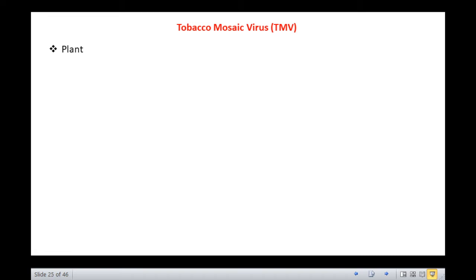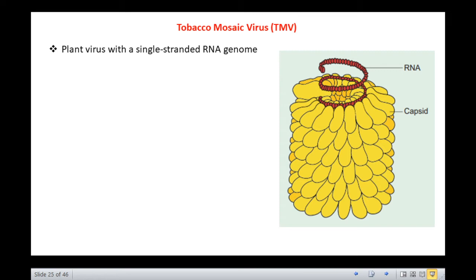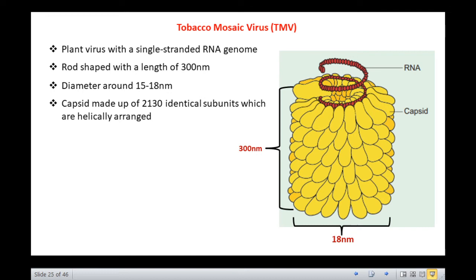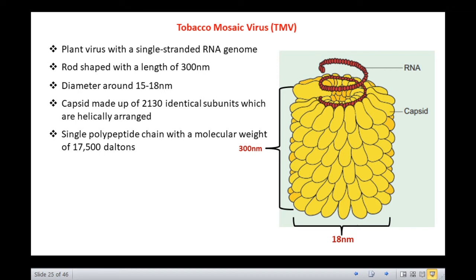The commonest example of helical symmetry is tobacco mosaic virus, a plant virus with a single-stranded RNA genome of 6390 nucleotides. The virus is rod-shaped with a length of 300 nanometers and a diameter of around 15 to 18 nanometers. The protein coat is made up of 2130 identical subunits arranged helically. Each subunit is made up of a single polypeptide chain with a molecular weight of 17,500 daltons, comprising 158 amino acid residues and is one of the first proteins whose sequence was determined.